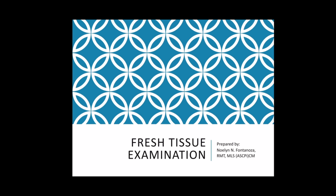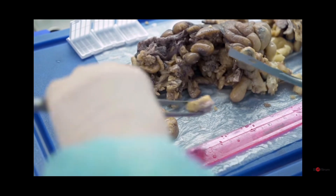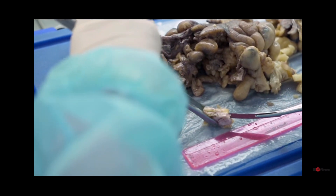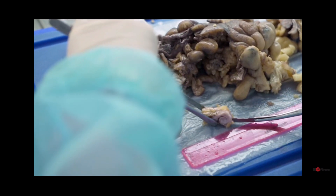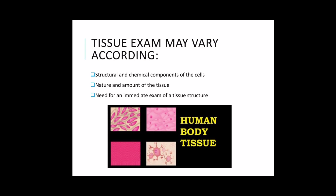Fresh tissue examination. The methods of tissue examination may vary according to the structural and chemical components of the cells to be studied, the nature and amount of the tissue to be evaluated, and the need for an immediate examination of a tissue structure.